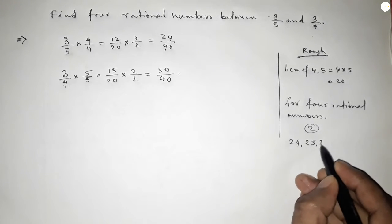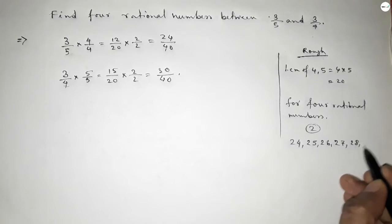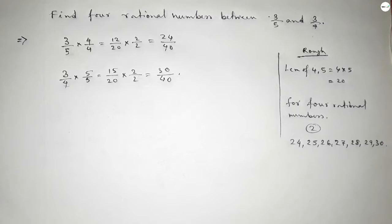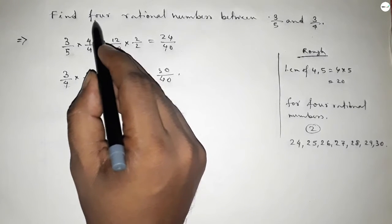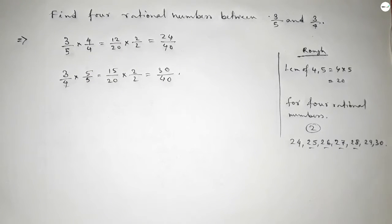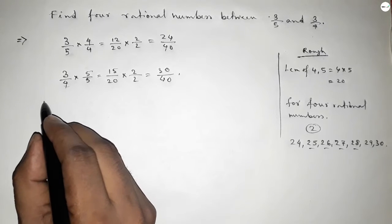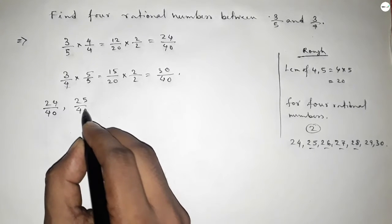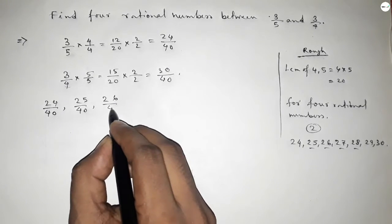Now between 24 to 30 we can get these natural numbers, and we need to find four rational numbers, so we take only four natural numbers to form four rational numbers. So here all the rational numbers are 24/40, 25/40, 26/40, 27/40, 28/40, 30/40.